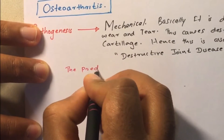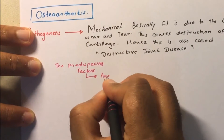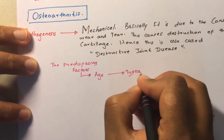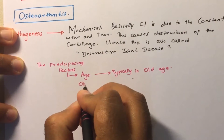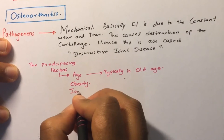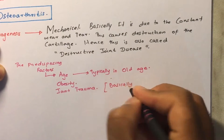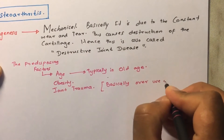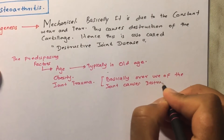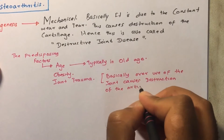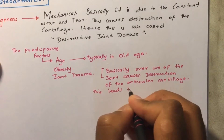The first main predisposing factor is age — it is very common to see osteoarthritis in old people rather than the young. Next, obesity and joint trauma are also main reasons for development of osteoarthritis, because there is overuse of the joint surfaces causing destruction of the articular surfaces.